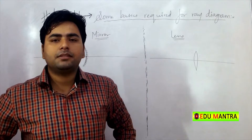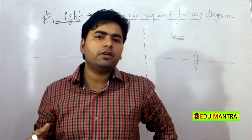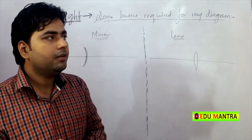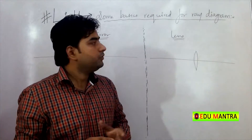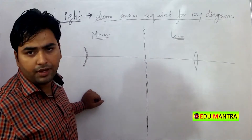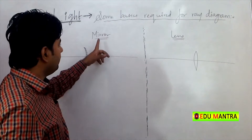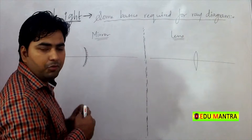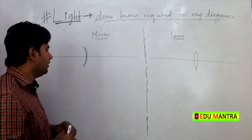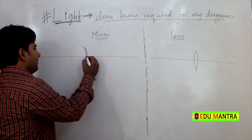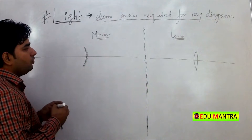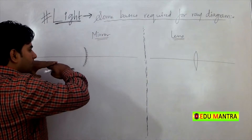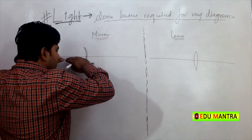This time, let's cover the basics of what we require for a ray diagram. Ray diagrams are very important in this chapter. So there are some basics required here. For a mirror and lens, we have to create ray diagrams in this chapter. So, what are the basics required? First, if we have to create a ray diagram, we have to assume that the mirror and lens will be formed.